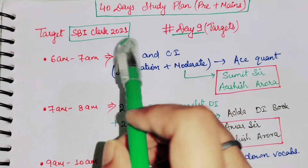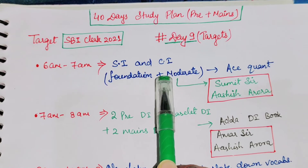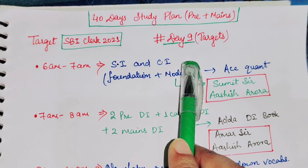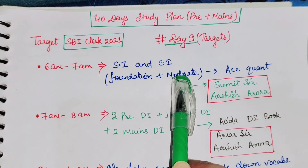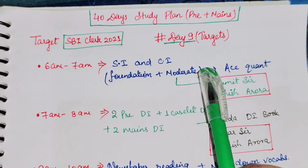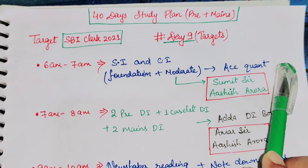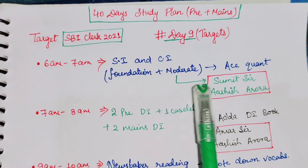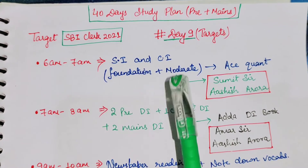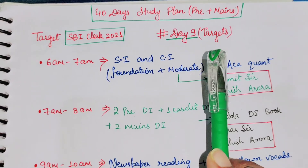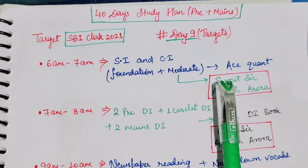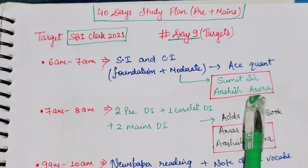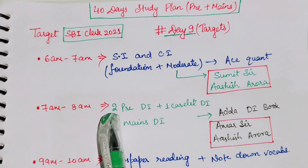From 6 AM to 7 AM today, you have to do Simple Interest and Compound Interest. You have to do foundation plus moderate level questions, and you have to do it from the HQ and book. I have shared this on my Telegram channel. If you want help with videos or don't understand how Simple Interest and Compound Interest questions are solved, you can get help from 7 AM to 8 AM.